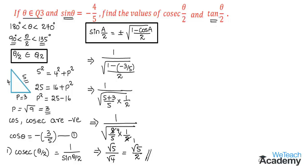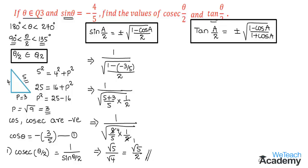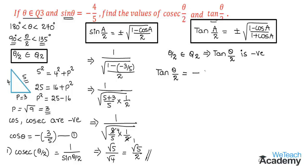Now let us find the value of tan theta by 2. Using the half-angle formula, tan a by 2 equals plus or minus under root of 1 minus cos a divided by 1 plus cos a. Replacing a with theta and using equation 1, since theta by 2 belongs to quadrant 2, tan theta by 2 is negative — tan is negative in the second quadrant.